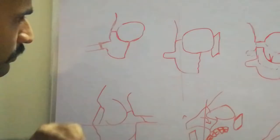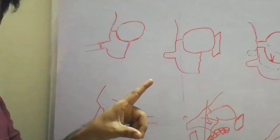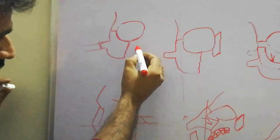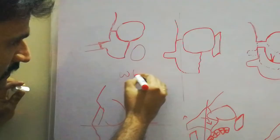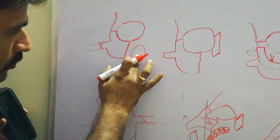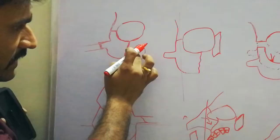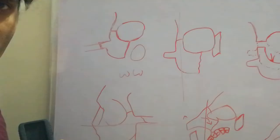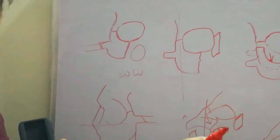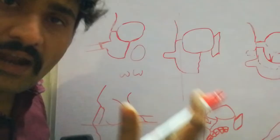The third process is the maxillary process, which unites with the maxillary bone to form the zygomatico-maxillary suture. Here is the zygoma bone; we will have the maxillary antrum and maxillary teeth here, though I have not drawn those for convenience. The maxillary process of the zygoma bone fuses with the maxillary bone to form the zygomatico-maxillary suture. The fourth process is the orbital process, which fuses with the sphenoid bone within the lateral wall of the orbit.